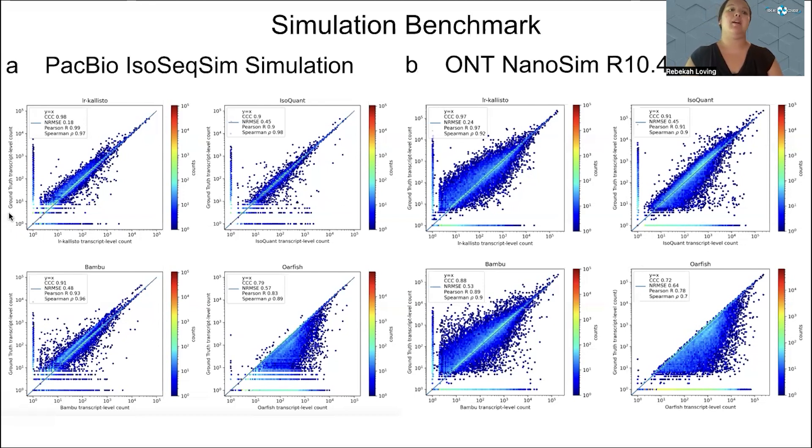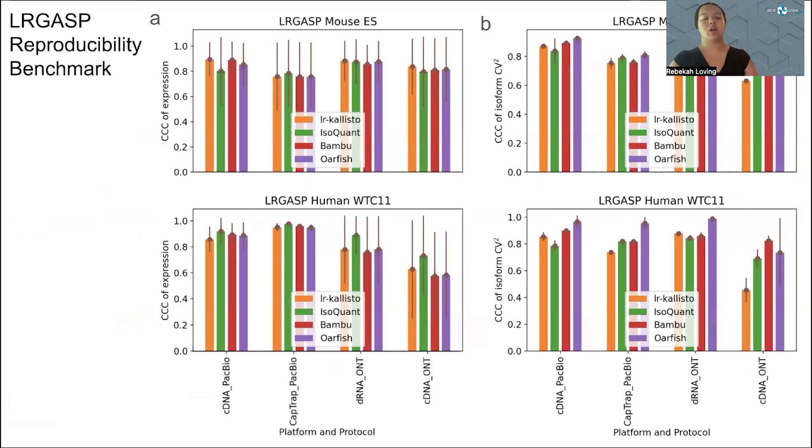To assess the reproducibility across technical replicates, we also looked at the LR gas benchmarking data. Here we also see that LR Kallisto is really comparable in its reproducibility using concordance correlation coefficient of expression and concordance correlation coefficient of isoform coefficient of variation.